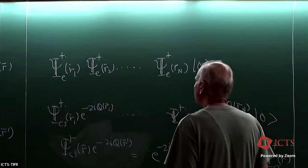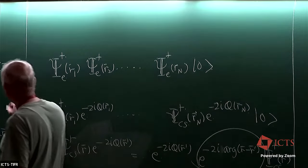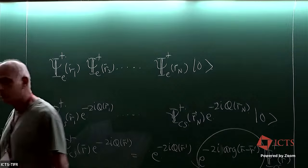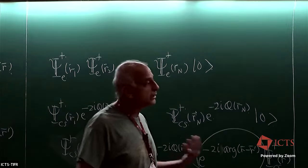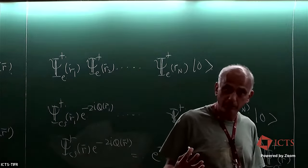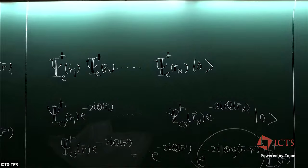I now have a prescription for going from the second-quantized Hamiltonian to the Hamiltonian written in terms of Chern-Simons fermions. That's what I want, because ultimately the Chern-Simons fields are what will occupy an integer number of Landau levels — they'll behave like the integer quantum Hall effect.